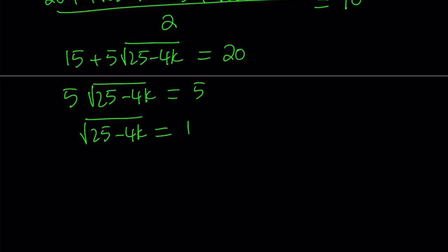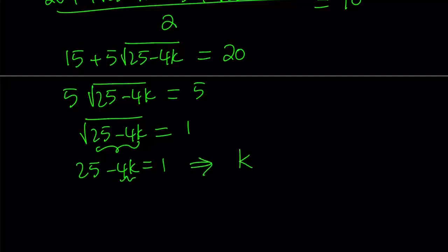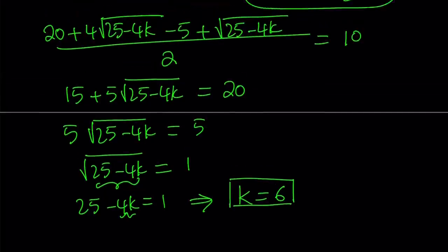We have something whose square root equals 1. So that means inside the radical we have to have 1, because in the real world the square root of 1 equals 1 — there is no other number besides 1 whose square root equals 1. So 25 minus 4k should equal 1. From here, 4k needs to be 24, and that means k equals 6. So we found the k value by using the quadratic formula.